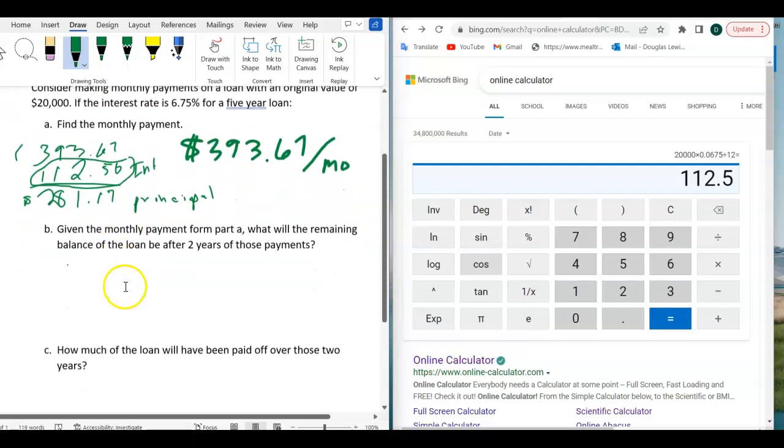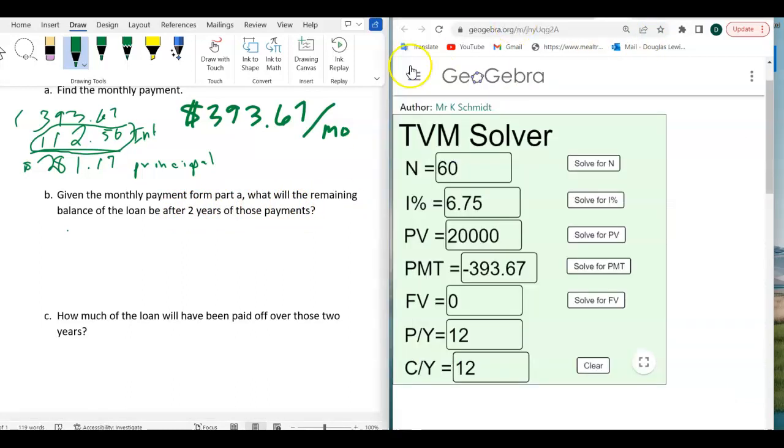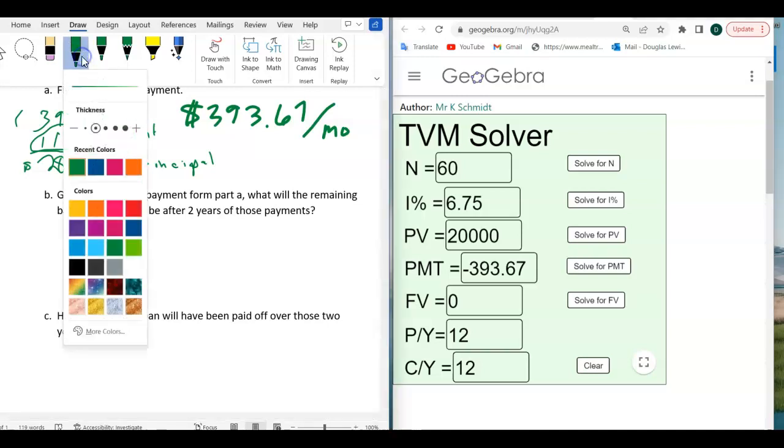So now let's go ahead and look at the next part of the problem. It says, given the monthly payment from Part A, what will the remaining balance of the loan be after two years of those payments? So this changes things quite a bit. Now, two years of payments have been paid off.